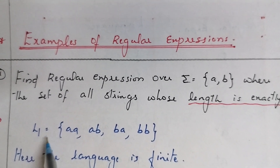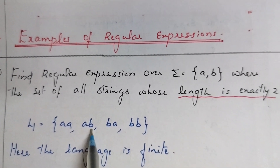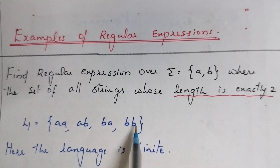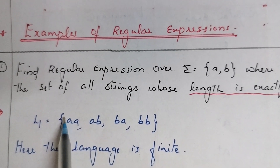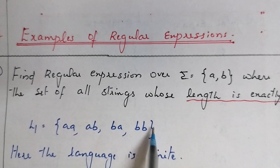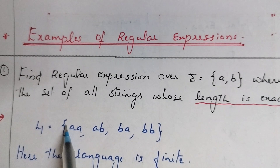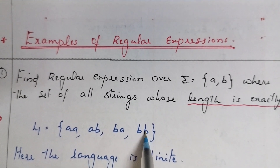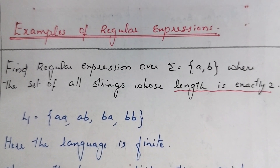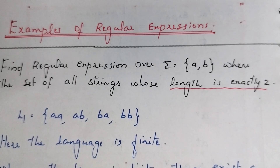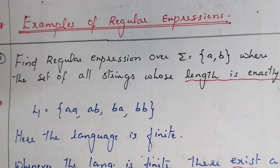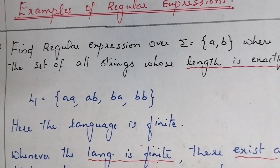In this language — let's call it L1 — these are the strings, and this language is finite because it has a finite number of strings. Whenever the language is finite, we already studied what a language is: it is a group of strings. A language may be finite or infinite. Finite language means a finite number of strings. If we have a language which is finite, then we can generate a finite automata and we can represent it using a regular expression.